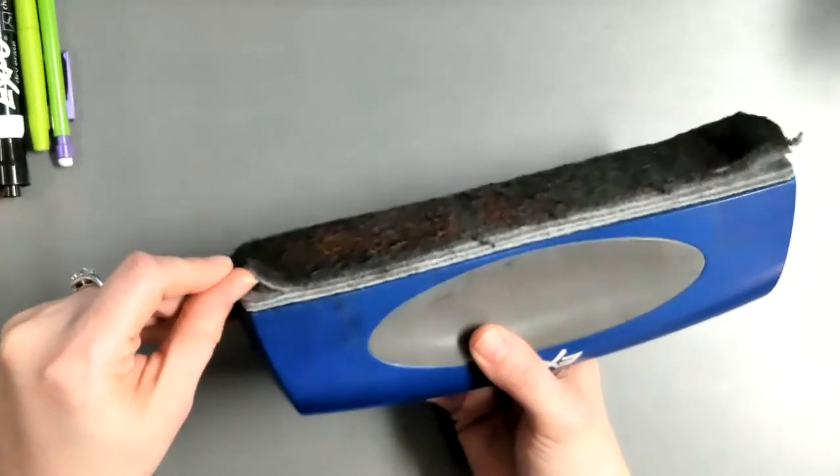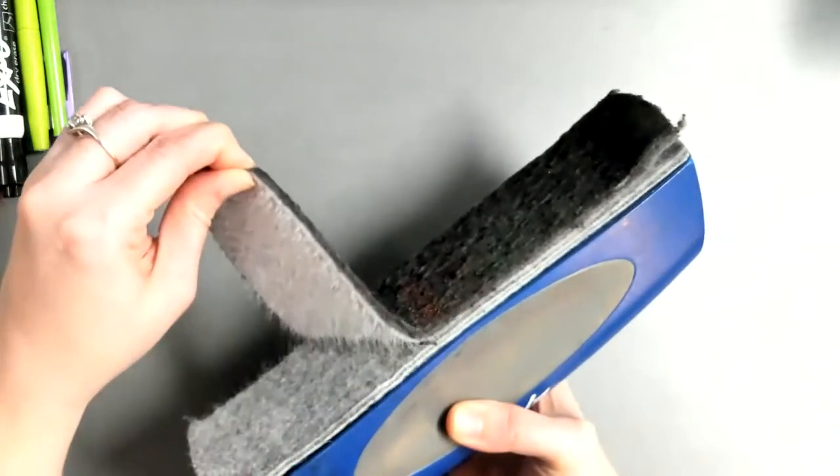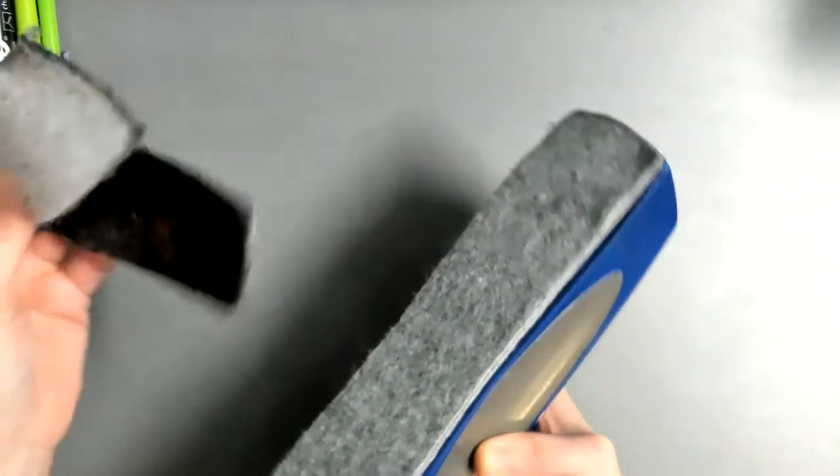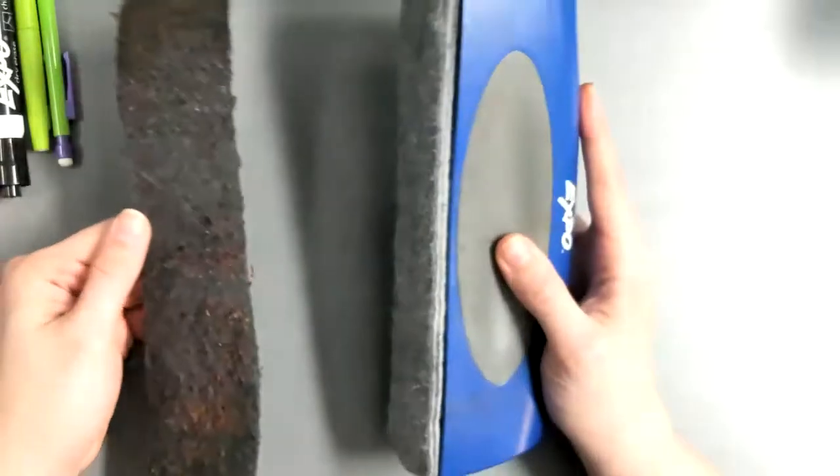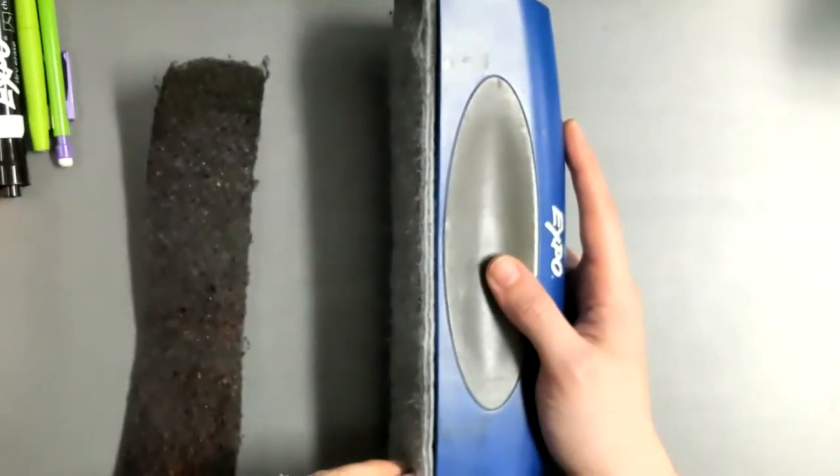What you'll find is that you can actually peel off that top gross layer, and then you have another layer underneath that you can use. You could actually do this one more time when this layer gets too gross before the eraser has to be thrown away.